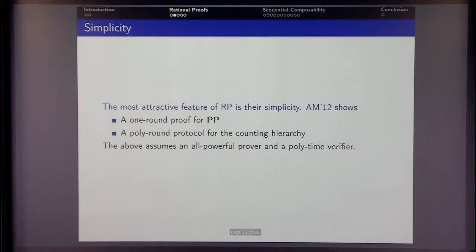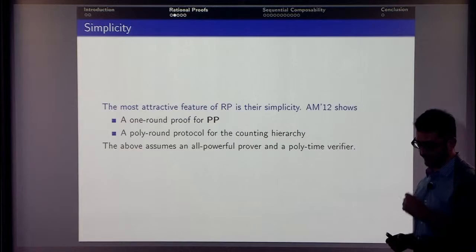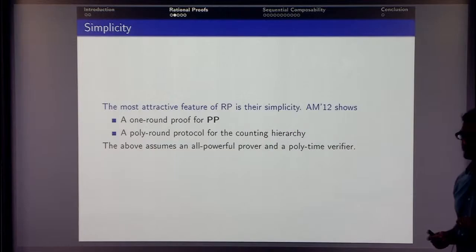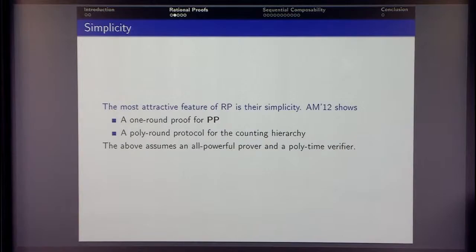The verifier computes the reward — it's polynomial-time computable. The verifier is honest in this model; it's not like zero-knowledge in which you have a malicious verifier. Security is defined only with an honest verifier.